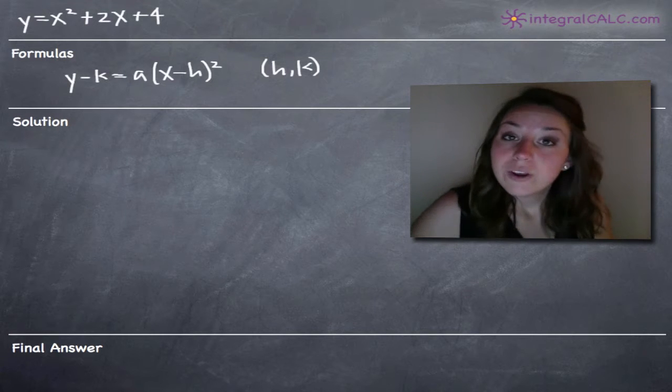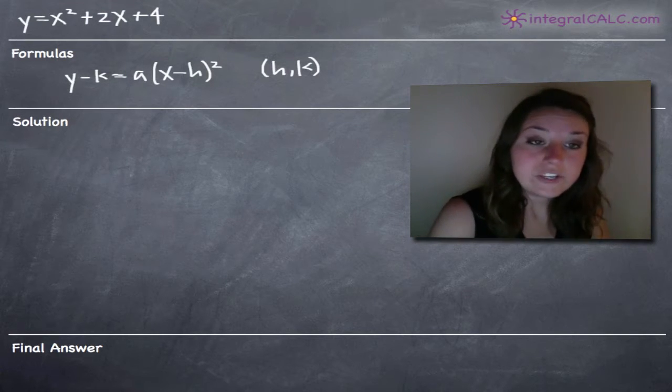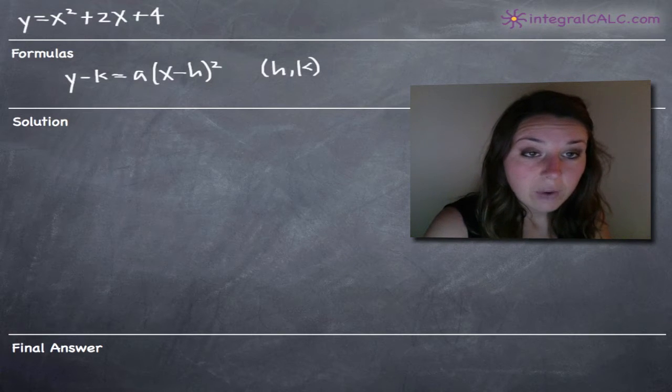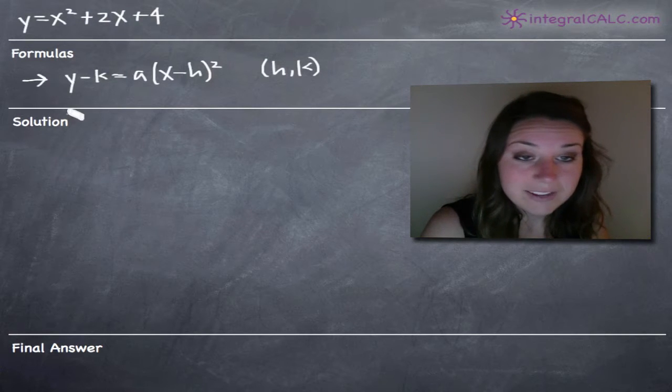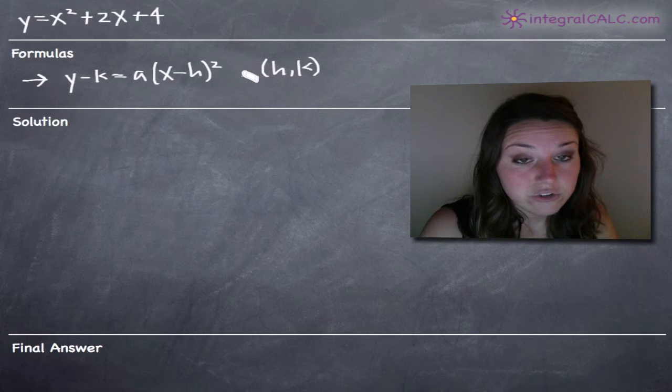Whenever we're talking about sketching parabolas, what we want to do is transform our equation into the form given by this formula here: y minus k equals a times x minus h squared.